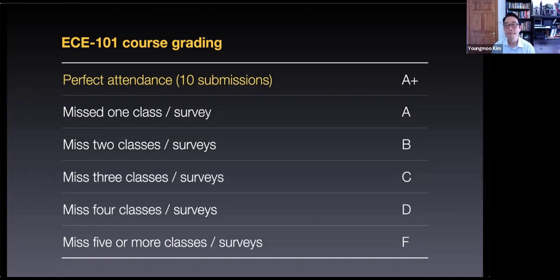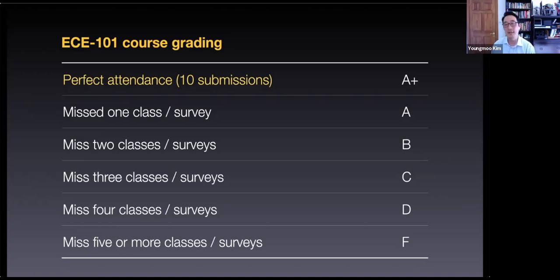There will be some extra credit opportunities — I'll have one even today — where you can bank an extra class or two. If you know you need to miss something in the future, or even make up for one. We'll have two or three of those opportunities throughout the term. But again, the easiest way to get an A+ in the class: just show up, fill out the short survey, and you're done.